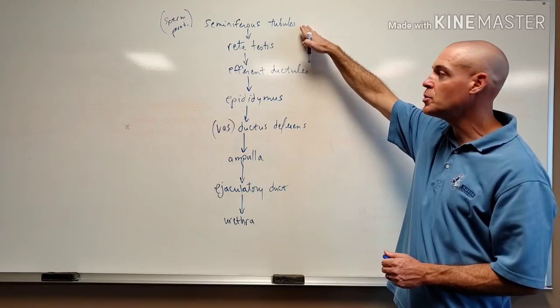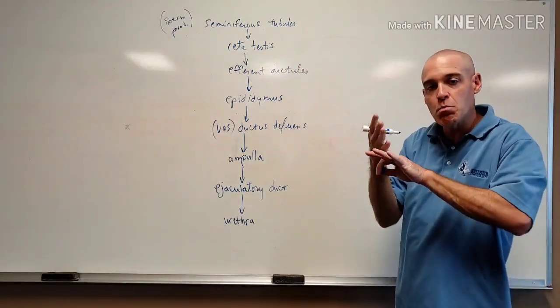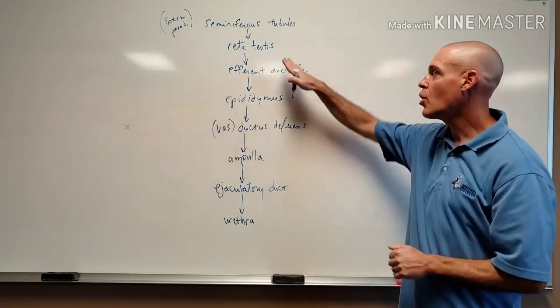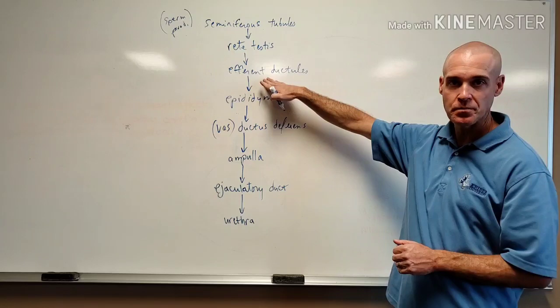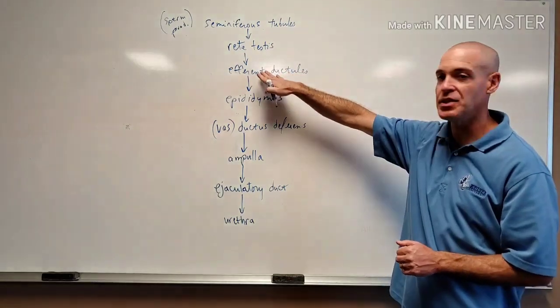They go through a little small network of tubes called the rete testis. Then they'll move into the efferent ductules. We're still in the testes.